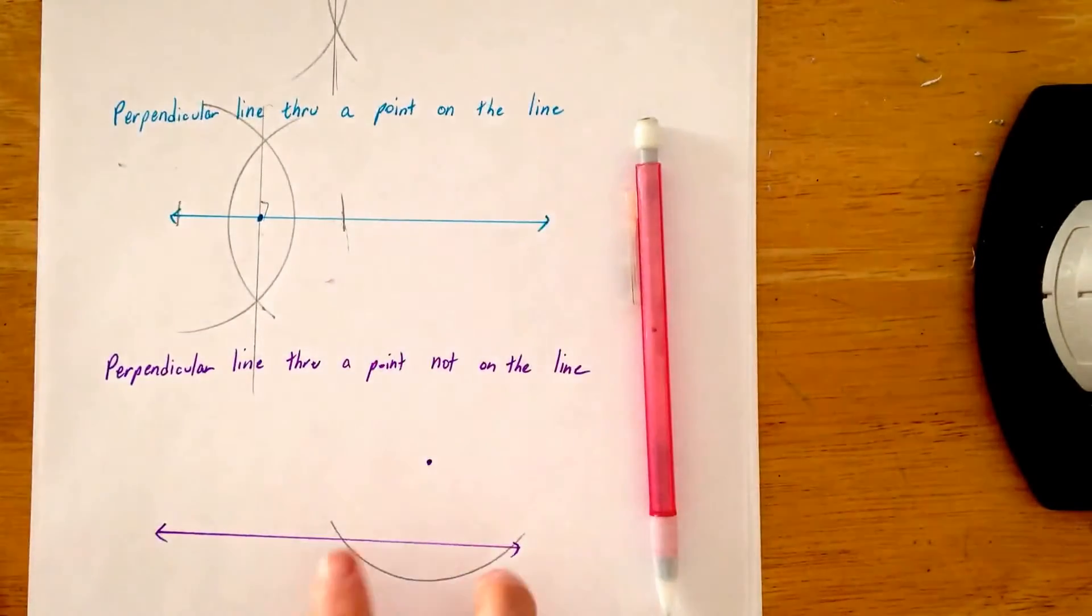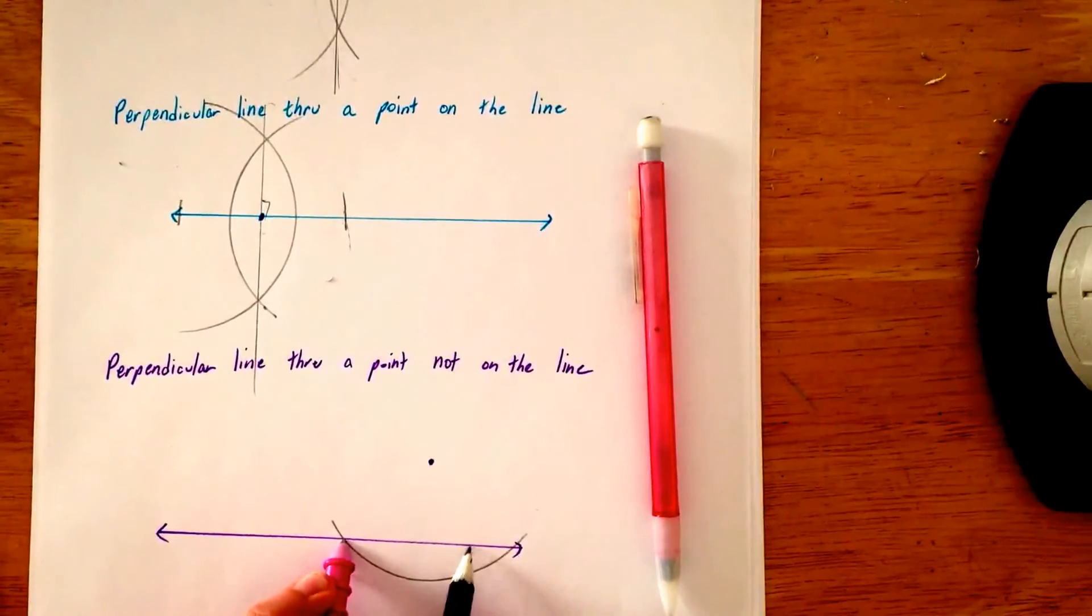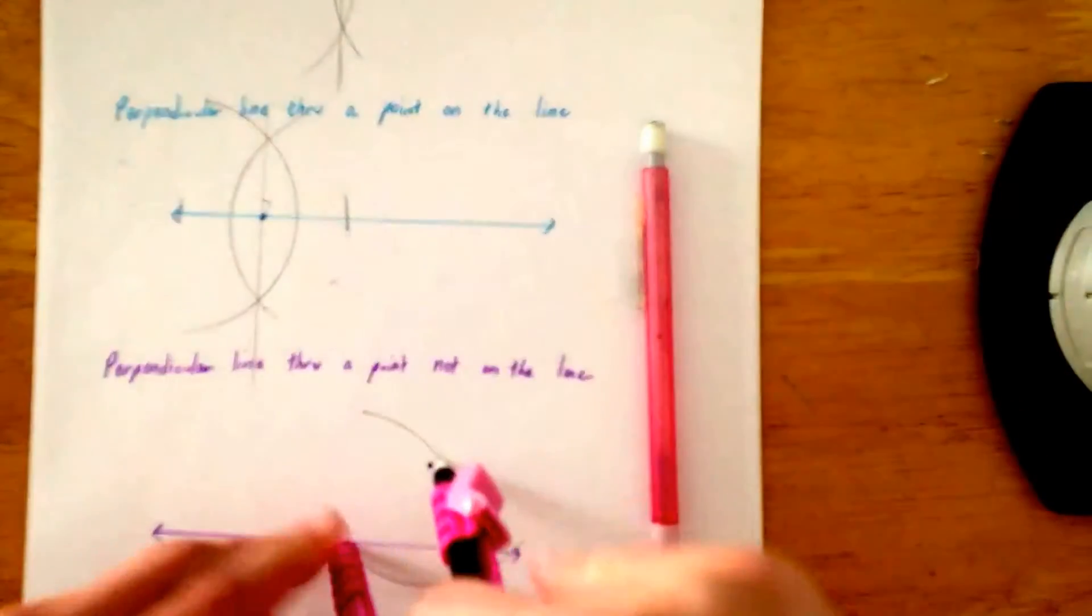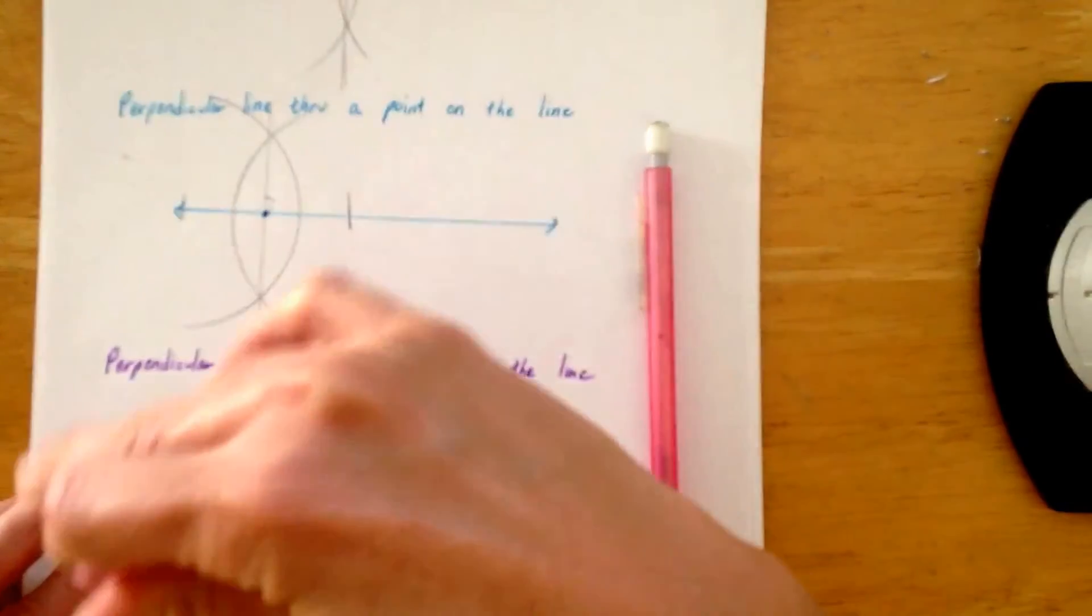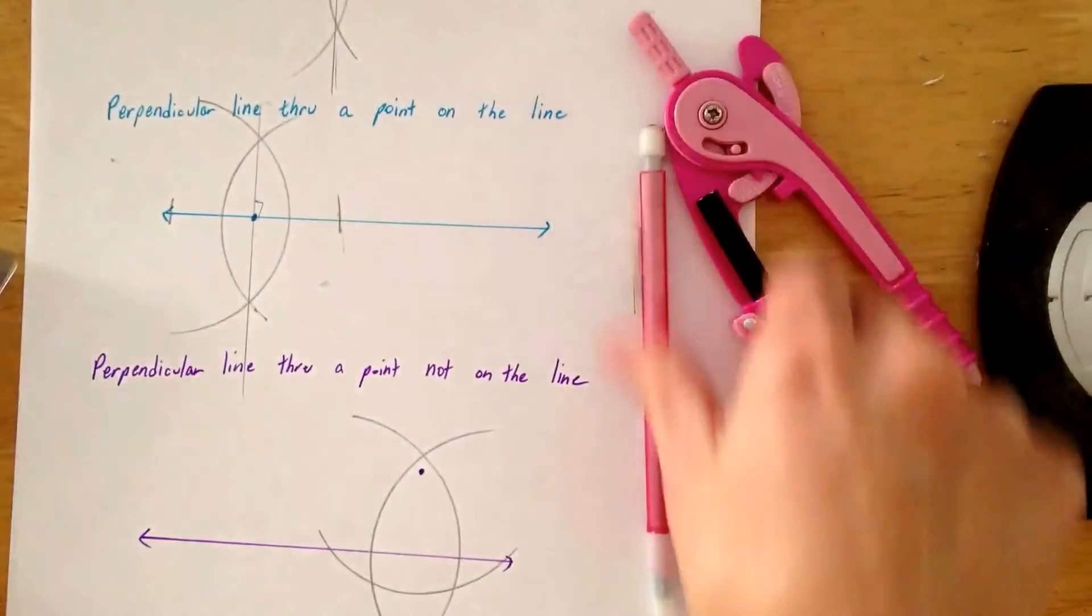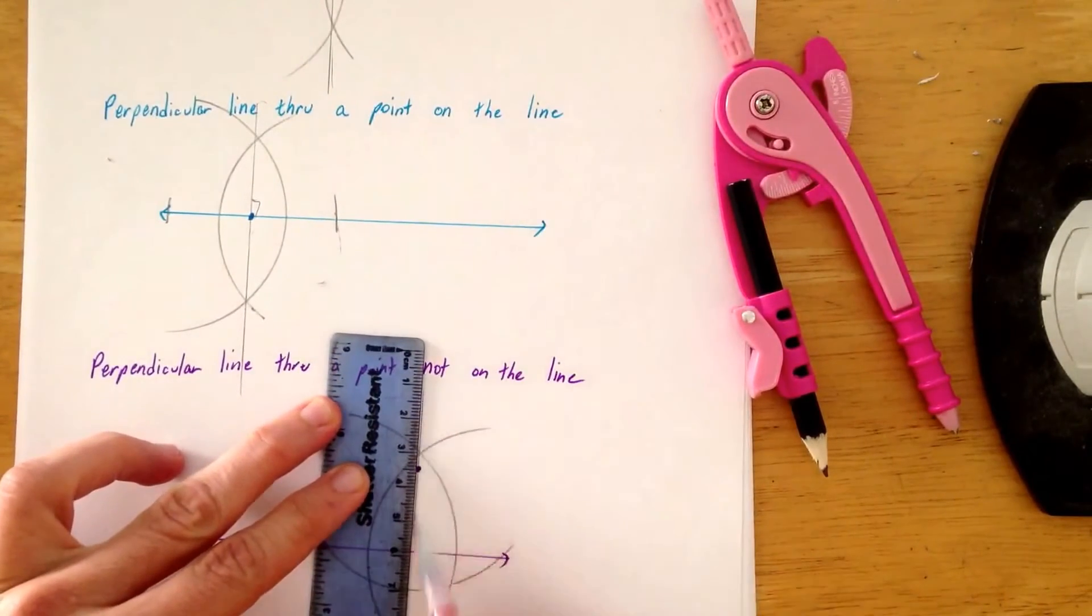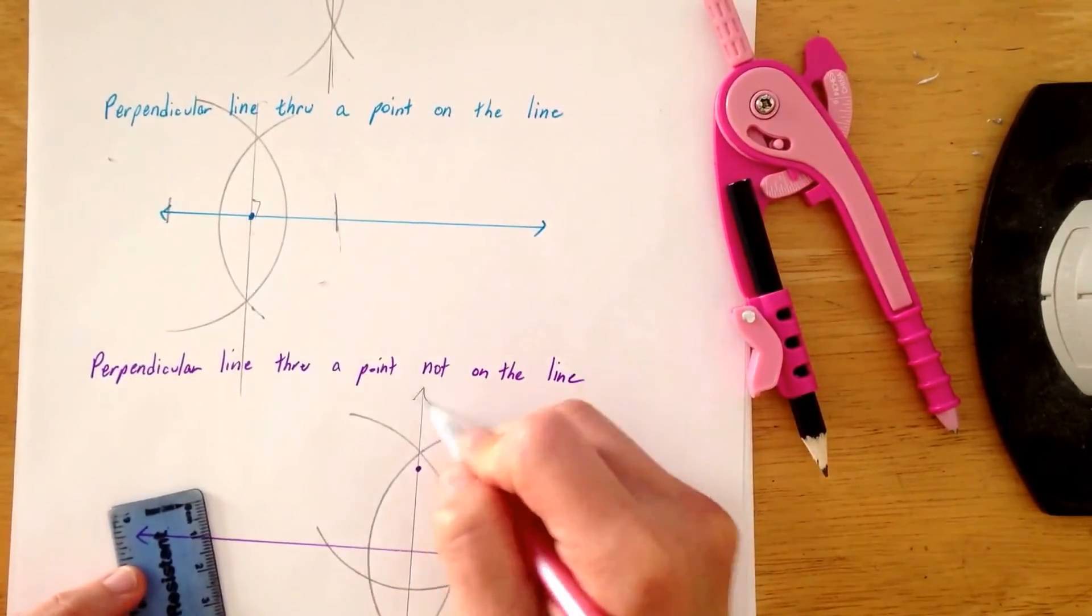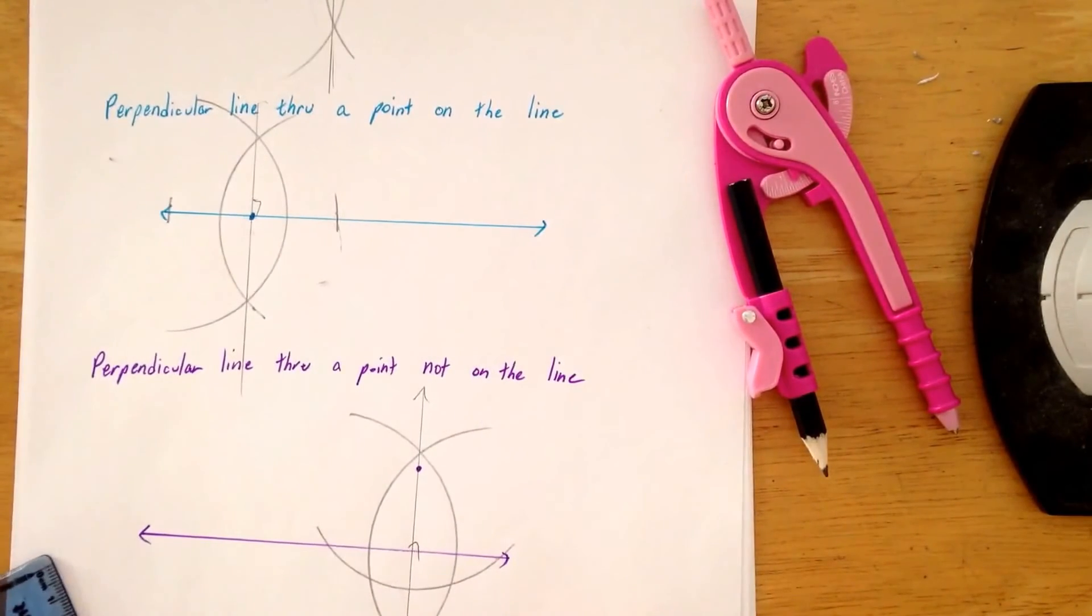So now that we've got our two end points, you can open your compass up to more than halfway, and draw an arc, and draw another arc, connect those two points there and there, and it should go through that line, that dot, perfect, perpendicular to that lovely line. Check.